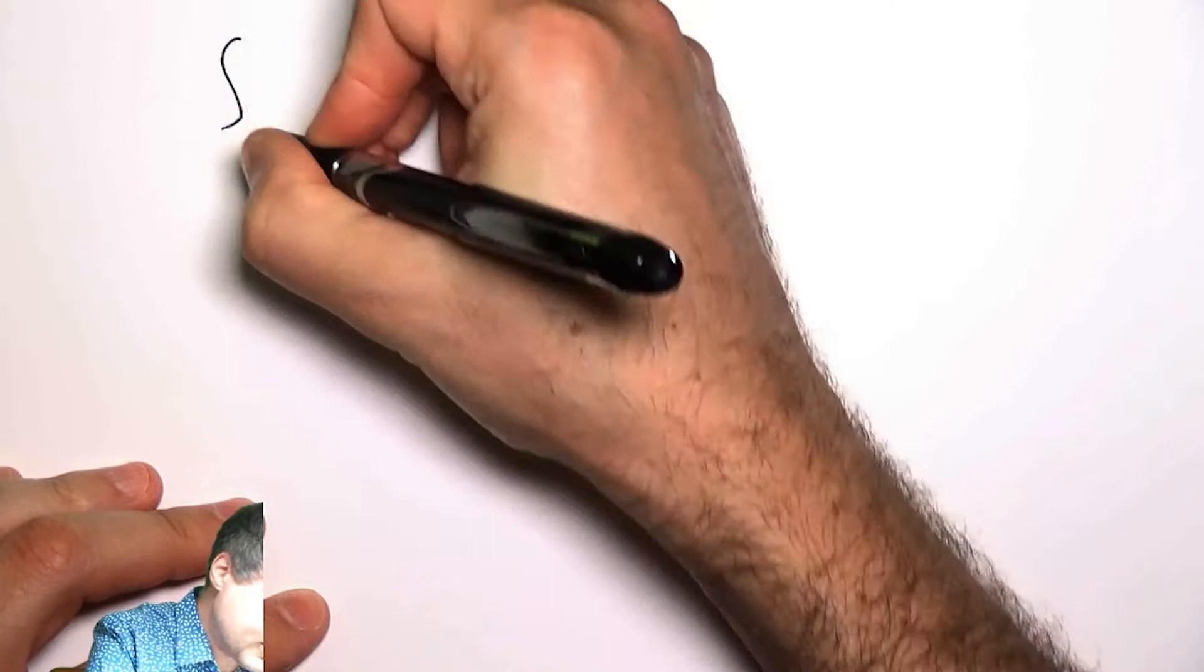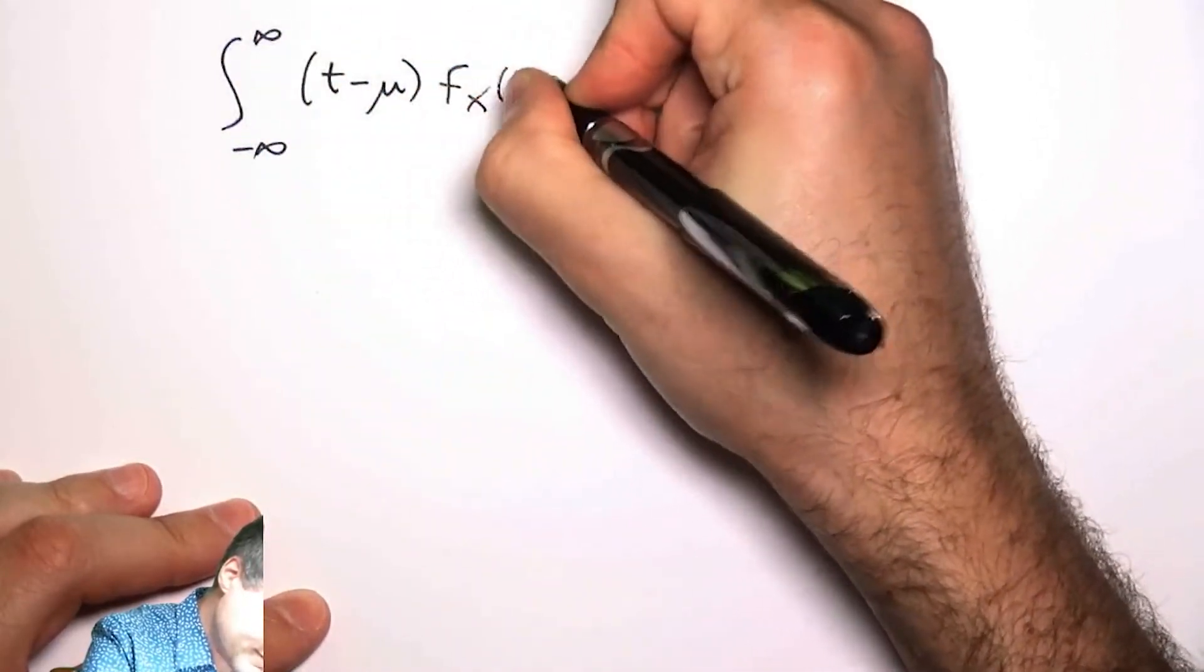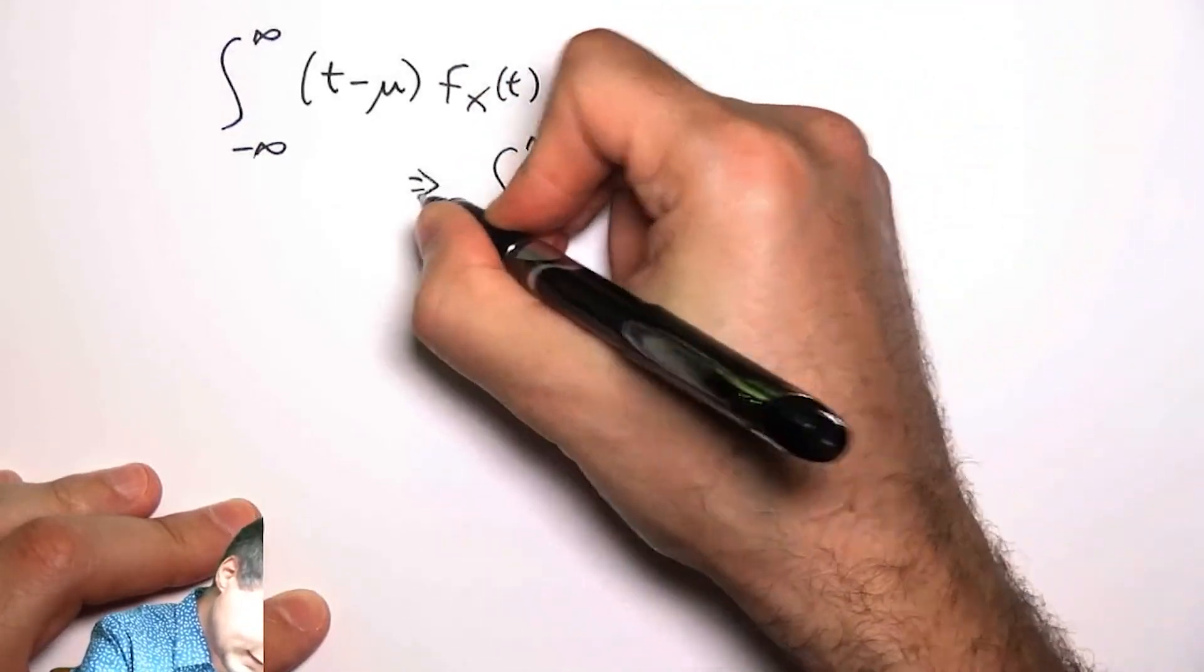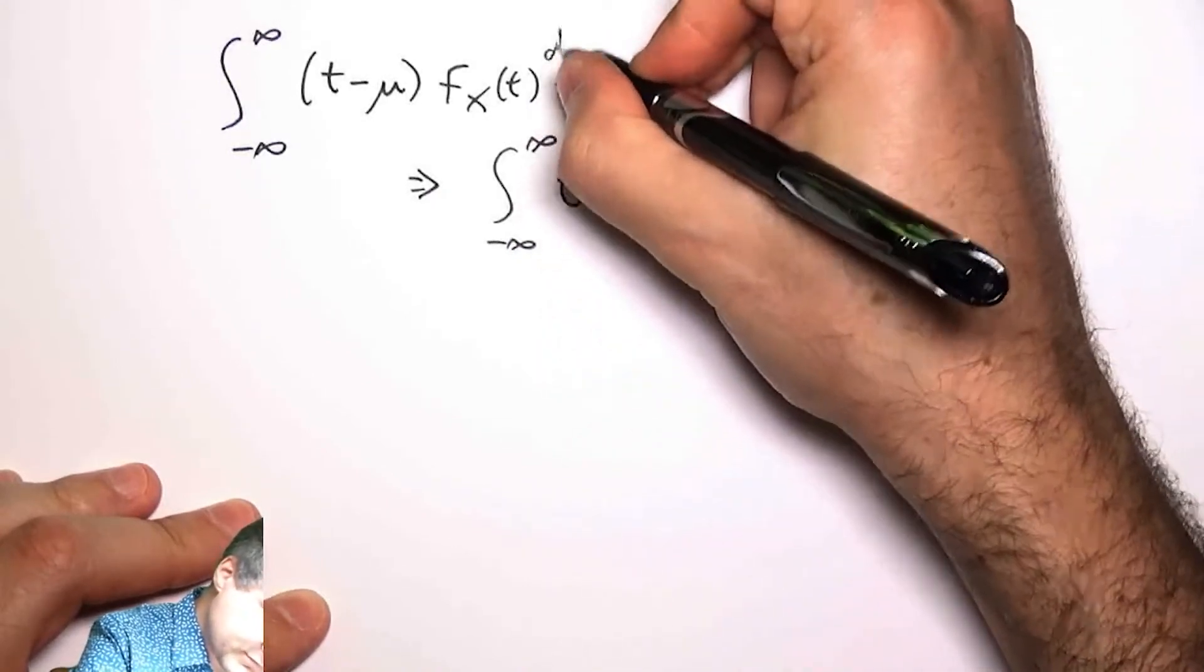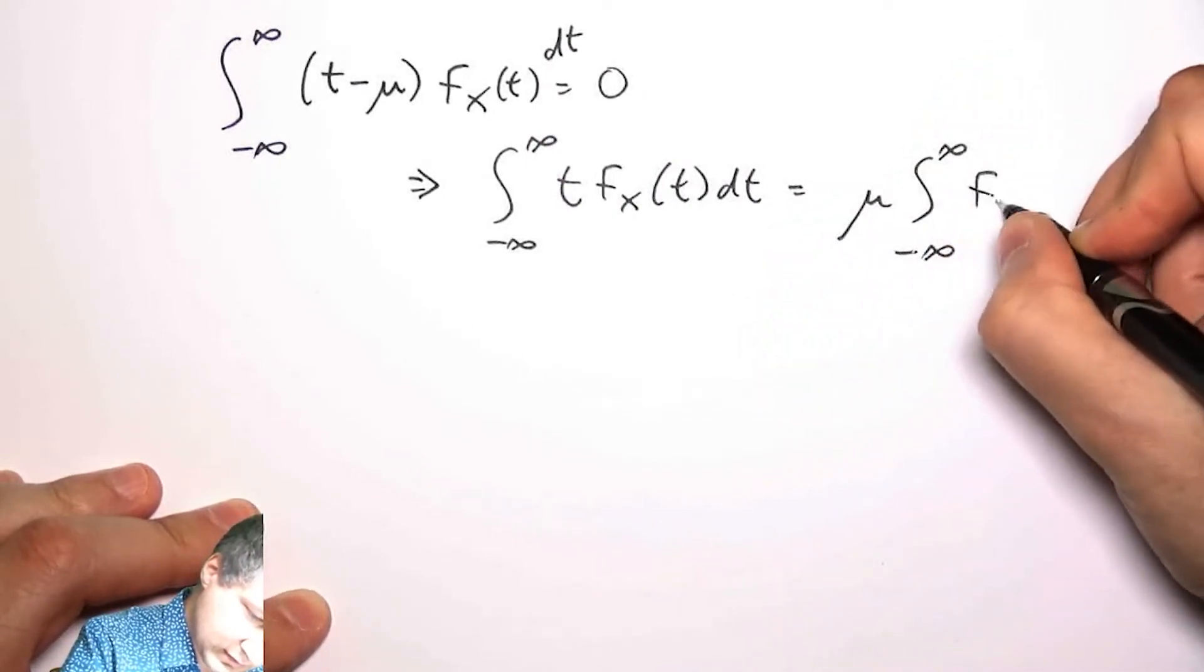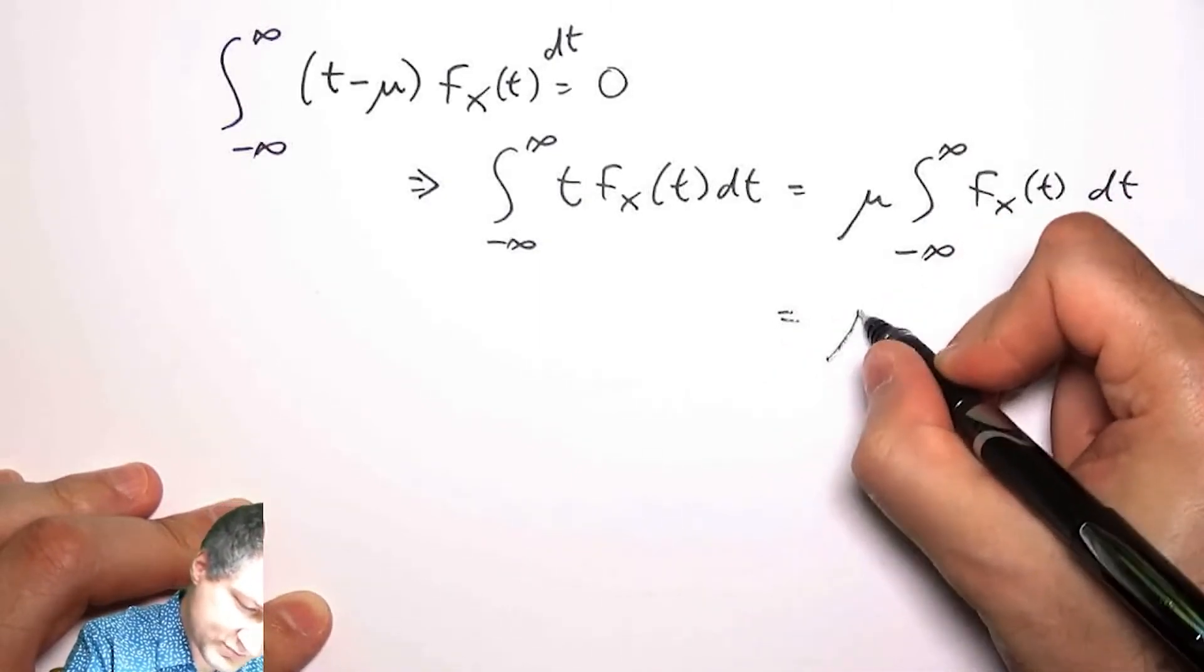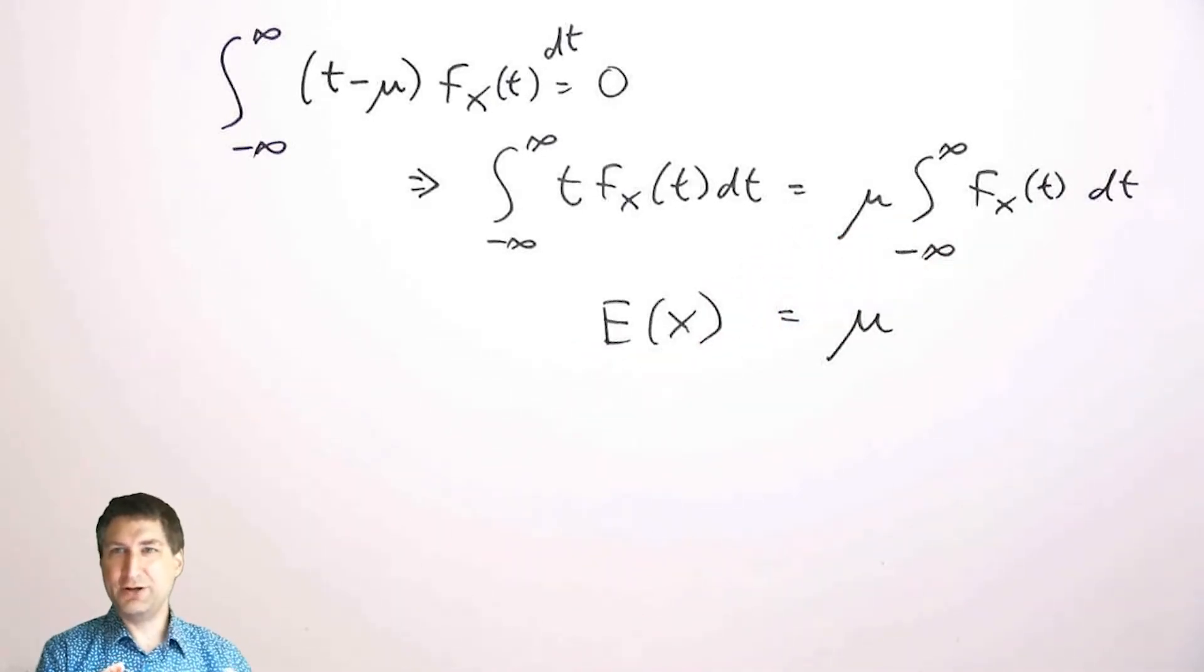It means that the integral of t minus mu times the PDF is equal to zero. A different way of saying that is that I have this integral, I have to put a dt here, equals this integral, right? This is just the whole integral of the PDF, which equals one. This is what I defined as the expected value. And so in this way, I kind of showed in a simple way that anything that's symmetric around the middle, that symmetry point is in fact the expected value.